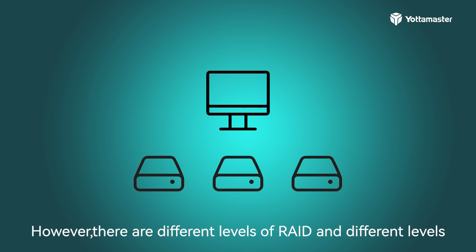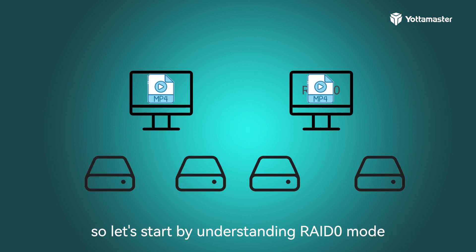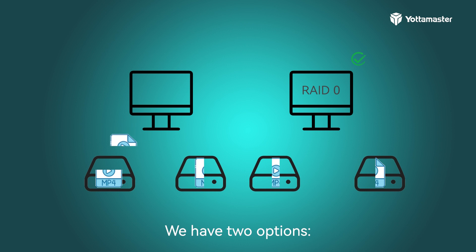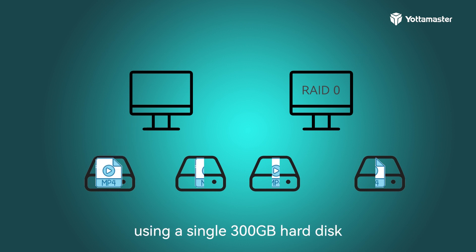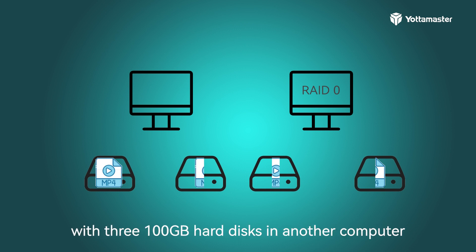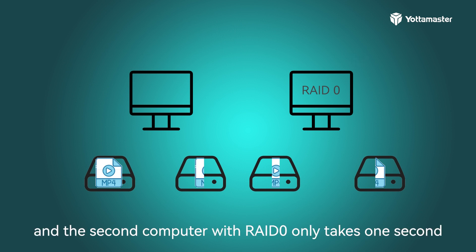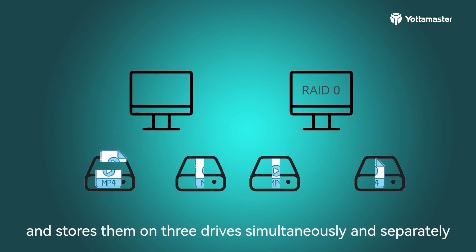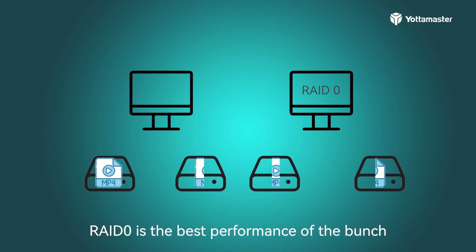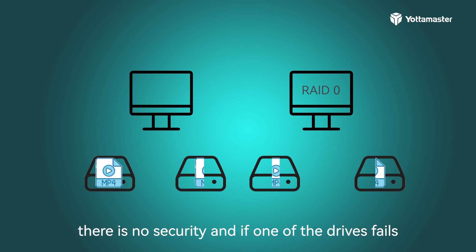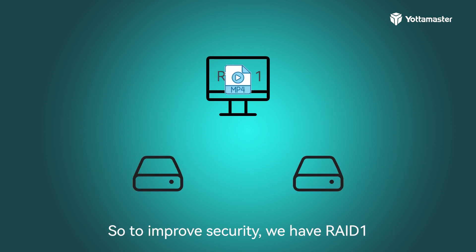There are different levels of RAID with different characteristics. Let's start with RAID 0. Suppose we want to store a 300GB video file. We have two options: using a single 300GB hard disk, or using a RAID 0 configuration with three 100GB hard disks. Assuming each drive has a write speed of 100GB/s, the first computer takes 3 seconds, while the second with RAID 0 only takes 1 second, because RAID 0 splits files and stores them on three drives simultaneously. RAID 0 offers the best performance, but because files are split across drives, there is no security — if one drive fails, all data becomes unusable.